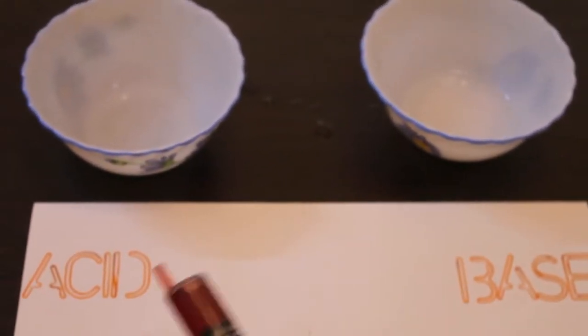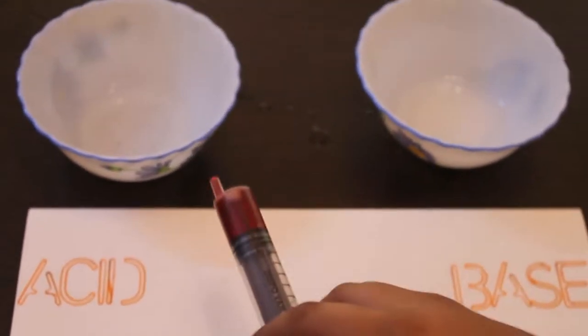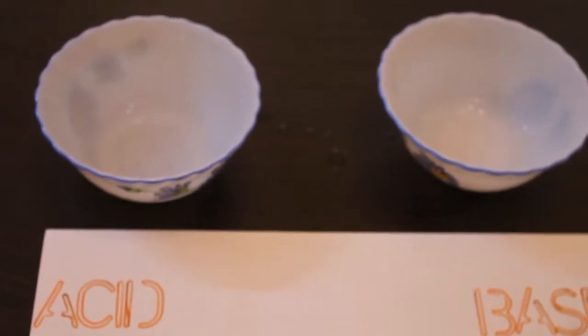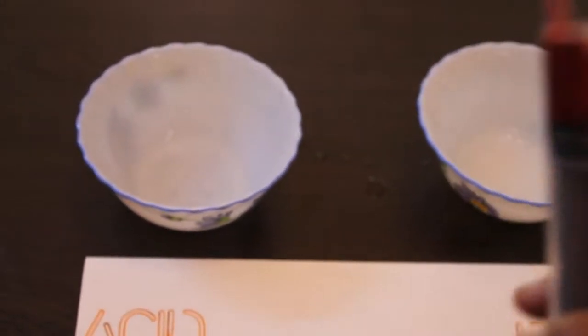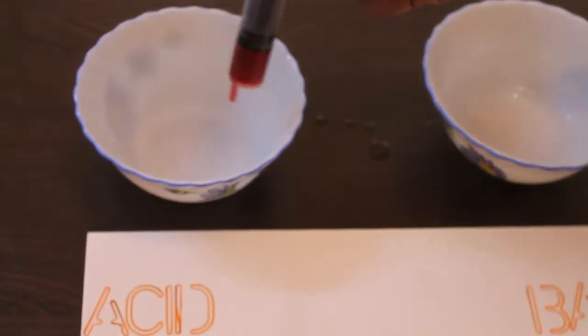Here I have an acid and here I have a base. So for the acid I have used vinegar and for the base I have used baking soda plus water. So now first I am going to put this much amount of beetroot solution into the acid. So let's see the color change.